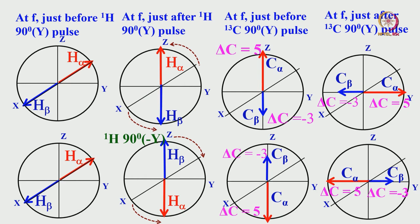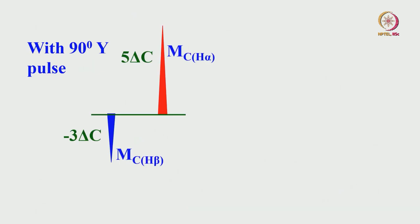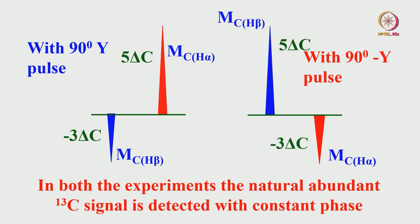When you apply simultaneous 90 degree pulses, we are changing the magnetization of C-beta and C-alpha in two types of experiments. Once, C-alpha is along plus-y and the other time it is minus-y. Similarly, C-beta is once in minus-y and the second time on plus-y. In both experiments, the natural abundance of carbon-13 is detected with constant phase — we are not touching it. We are only transferring magnetization from proton to carbon-13 for one of them. Natural abundance carbon-13 continues with constant phase.